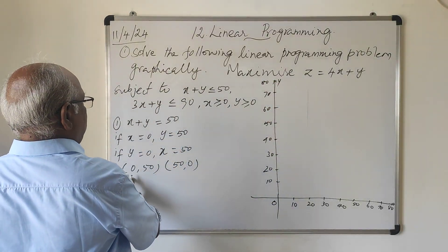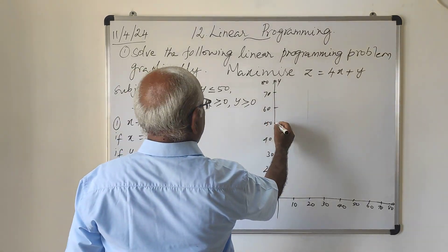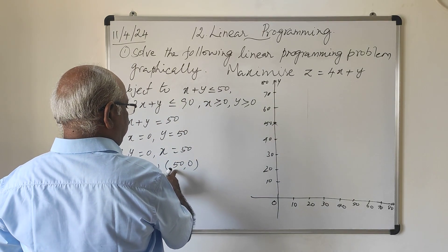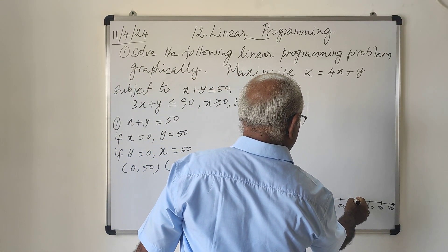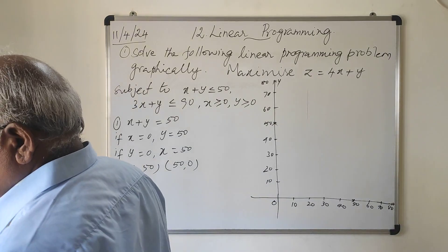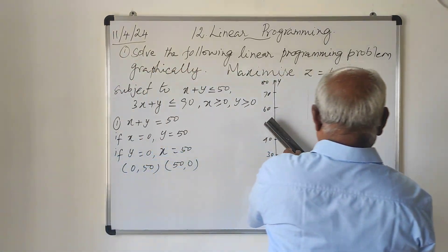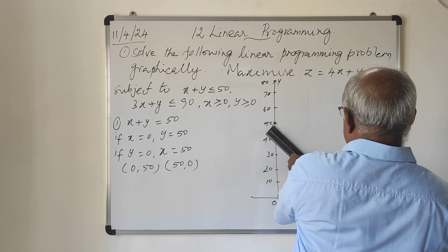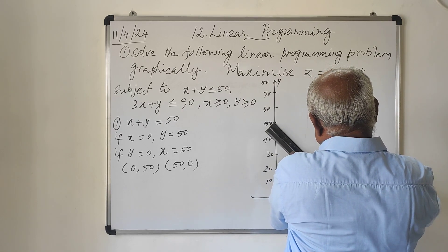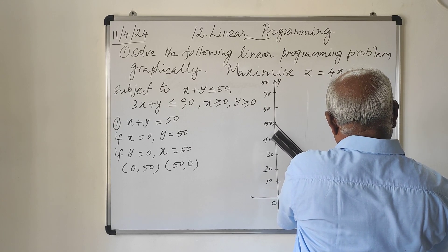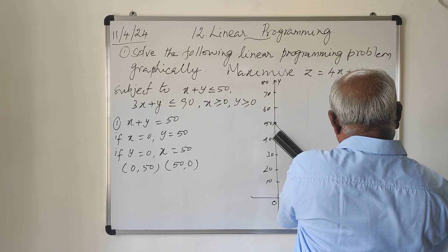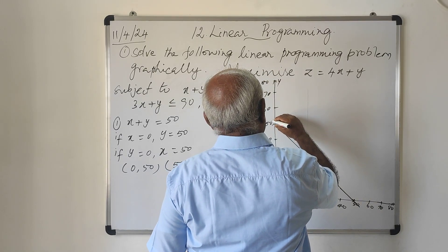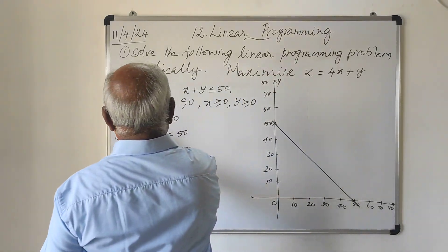The first line: when x equals 0, y equals 50, and when x equals 50, y equals 0. These are the two points. If you join these two points, you will get the line x plus y equals 50.